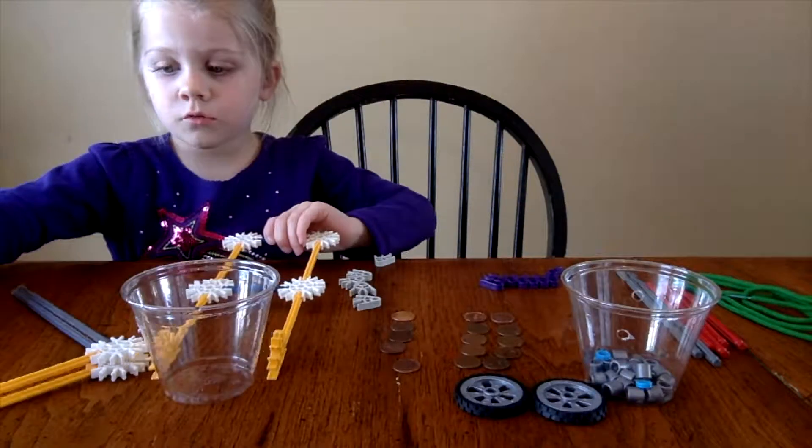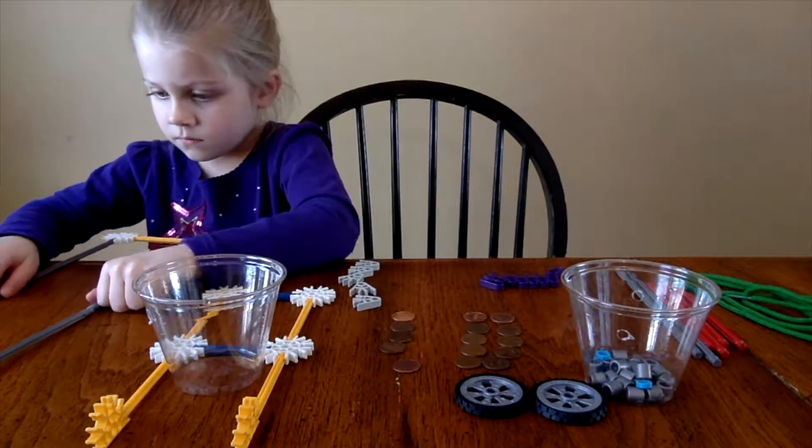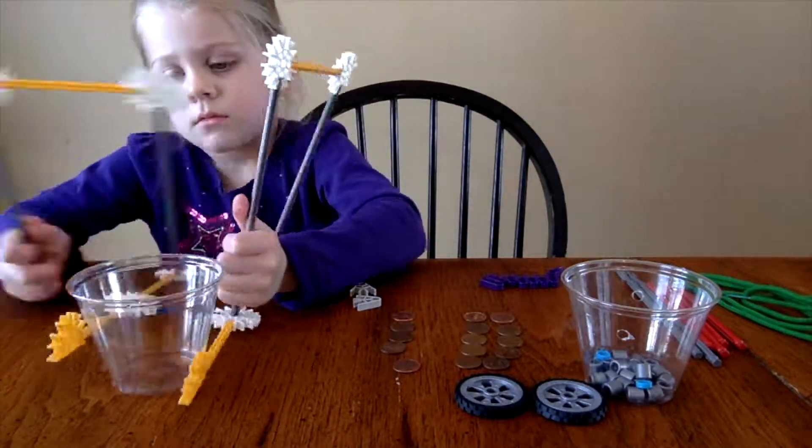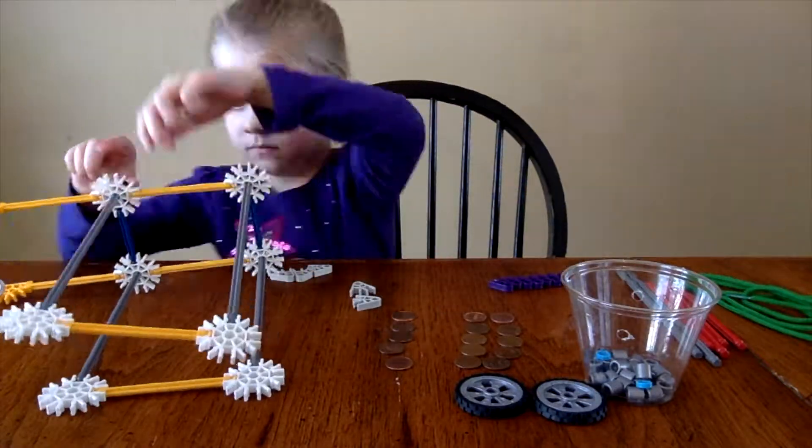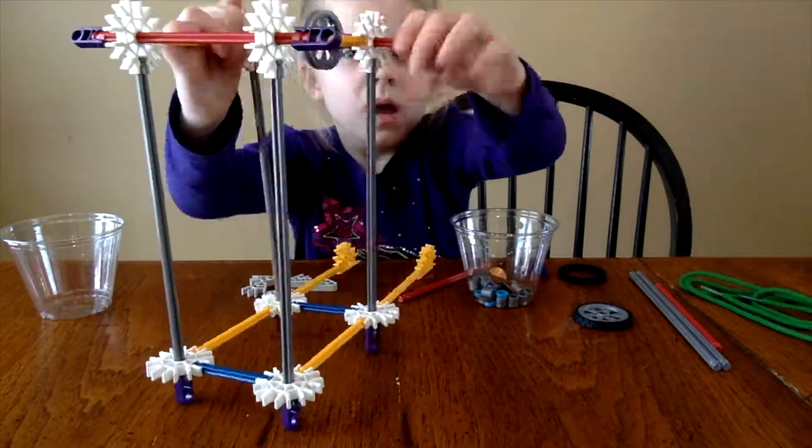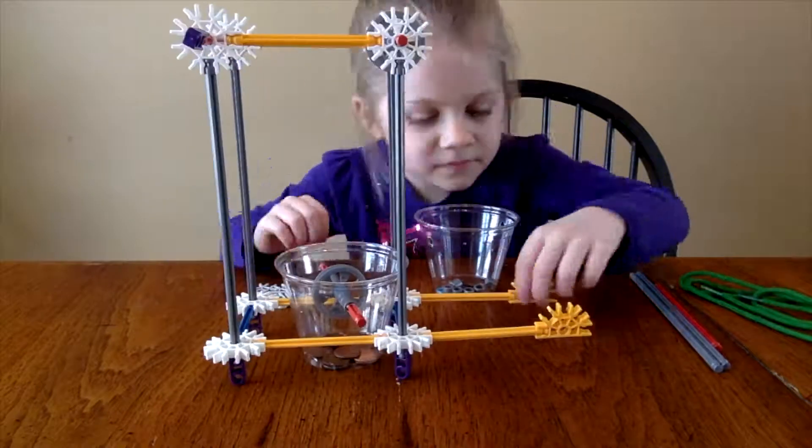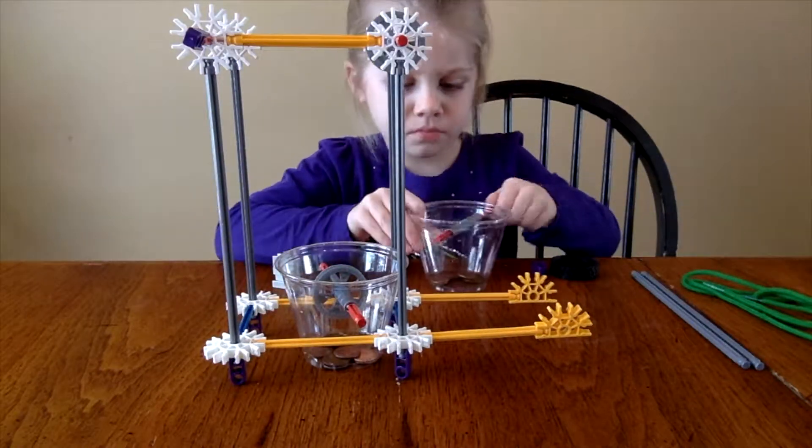Here's an example where my daughter and I built a pulley system using Konex toys to test how pulleys work. We used two wheels, one attached to a heavy load or a cup of water and the other attached to a fixed point above the cup. Then we ran a string around the wheels.